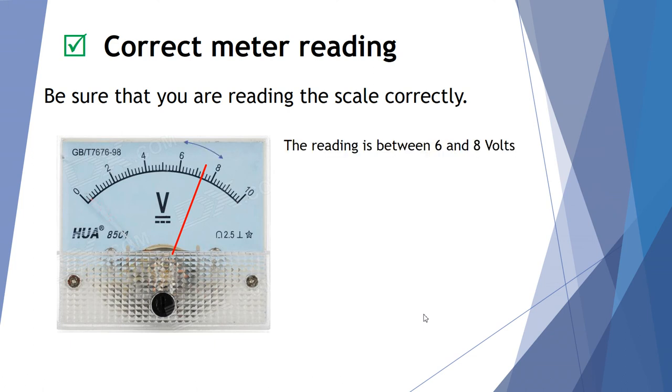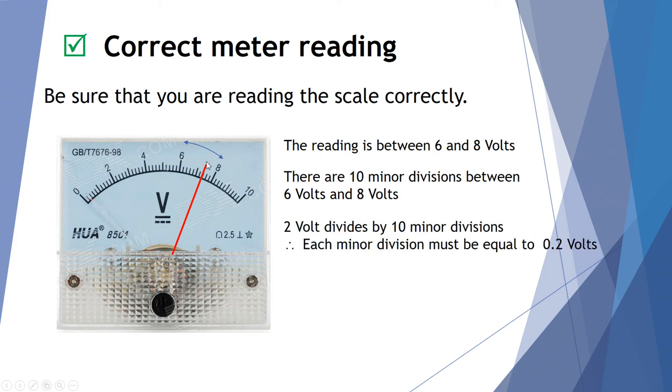Likewise with the voltmeter. Here you can see that our voltmeter is measuring between 6 and 8 volts. And again, there's 10 divisions between the 6 to 8 volts. So that's a difference of 2 volts divided by 10 divisions means each minor division will be worth 0.2 of a volt. So this is 0.2, 0.4, 0.6, 0.8 and then 7. So this one is 7 plus a further 2 divisions. 7 plus 2 minor divisions, each of 0.2 of a volt gives me a voltage reading of 7.4 volts.